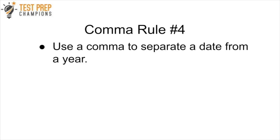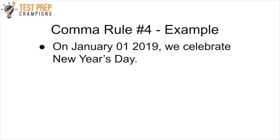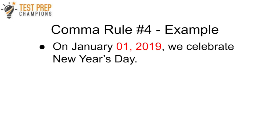Comma rule number four is to use a comma to separate the date from a year. For example: 'On January 1st 2019 we celebrate New Year's Day' is missing a comma. The comma should go between '1st' and '2019,' so it reads: 'On January 1st, 2019, and then the rest of the sentence.'